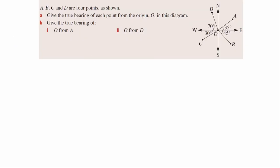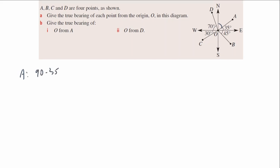Let's go through a couple of questions. A, B, C, and D are four points as shown on the diagram. Give the true bearing of each point from the origin. The origin is just there pointing north, so we want to find the angle between each point and north. Starting with point A — we're after that angle there. We know this is going to be a right angle, so I can find that by doing 90 minus 35.